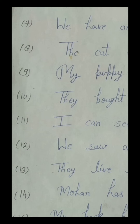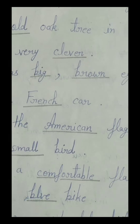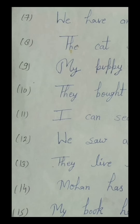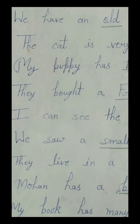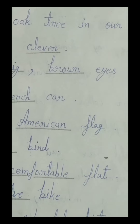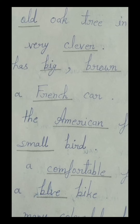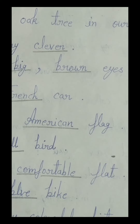The ninth number sentence is: 'My puppy has big brown eyes.' In this ninth number sentence, 'big' and 'brown' are both adjectives because they are describing the eyes of the puppy.